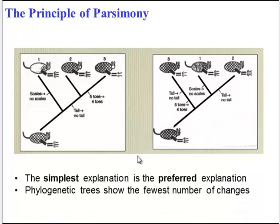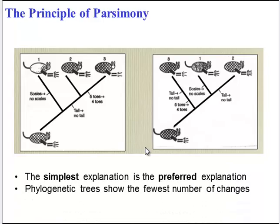In essence, parsimony is about the simplest explanation being the best. Given the choice between two phylogenetic trees, you want to choose the one that shows the fewest number of changes.